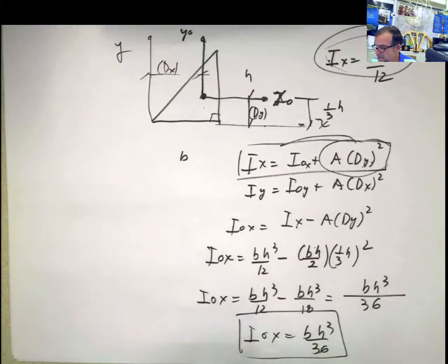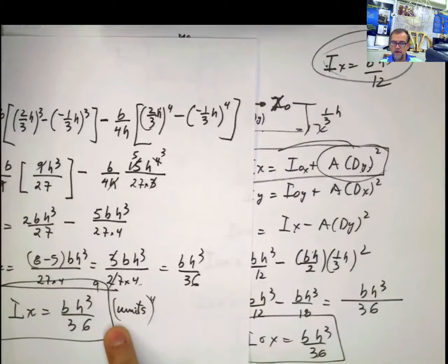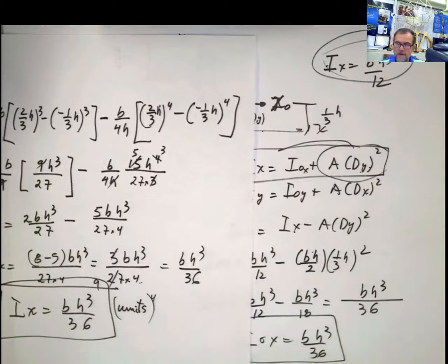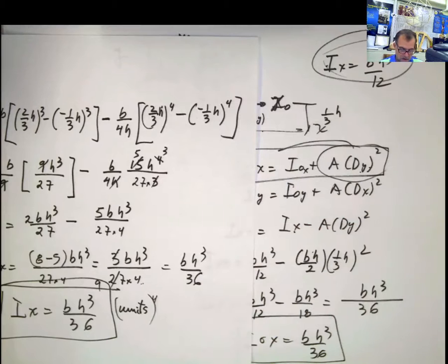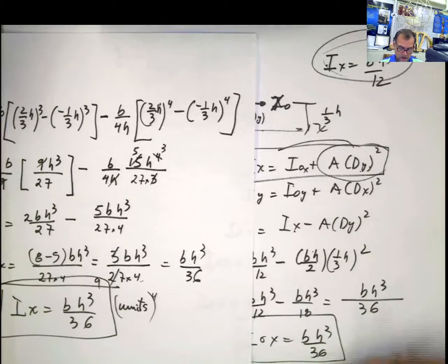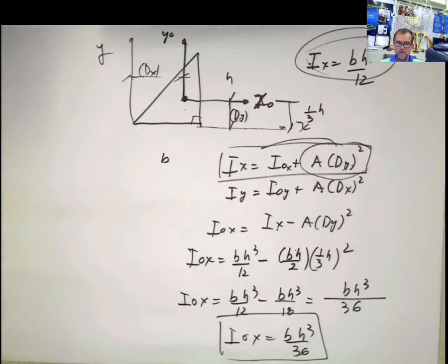That's the problem we solved in the previous video when we filled three, four, five pages of calculations. Look how we got it now. Be smart, guys, when you solve a problem. If you're asked to calculate the moment of inertia with respect to the centroid, sometimes it's easier if you have the other one and just convert it by applying parallel axis theorem or vice versa. Enjoy, guys, see you next record.